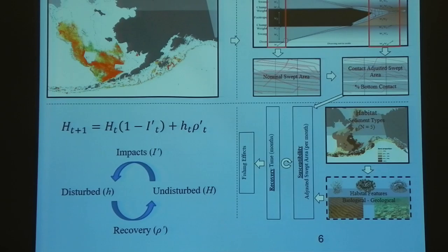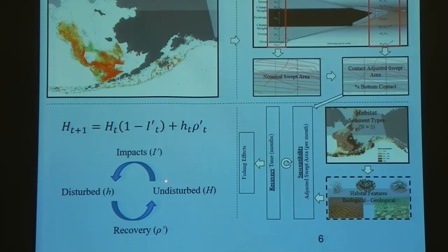This is really just a more colorful version of the last slide. What I want to point out in particular is that basically what we do is consider the world as either disturbed or undisturbed. Impacts basically convert a specific piece of real estate from undisturbed to disturbed, and recovery takes it the other way. That's how the model runs through time.